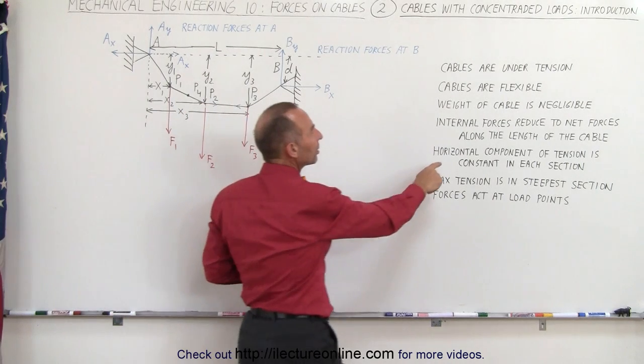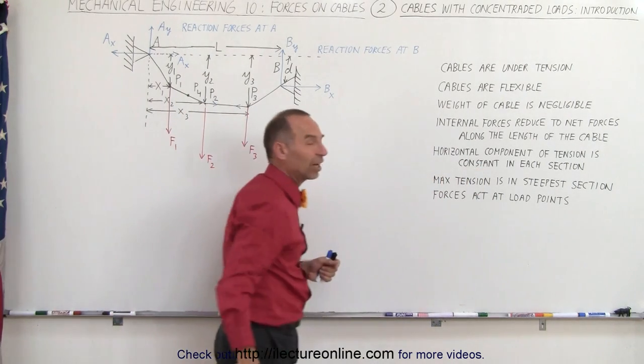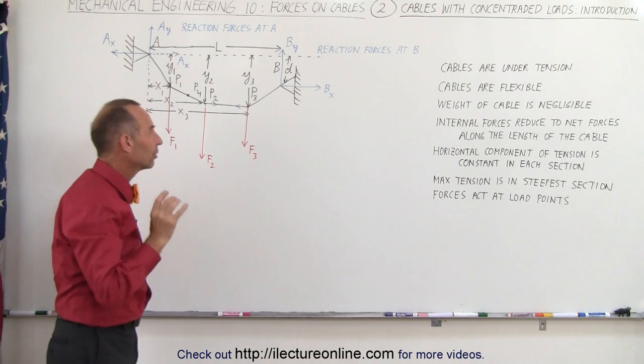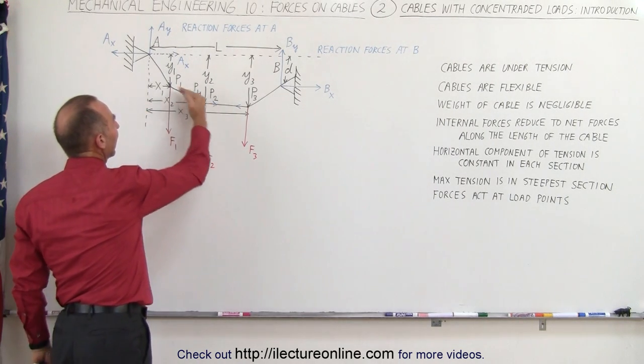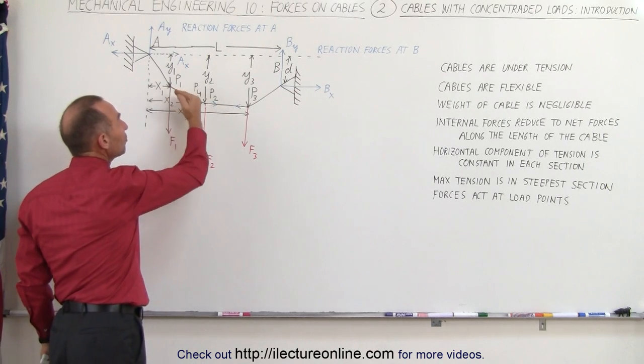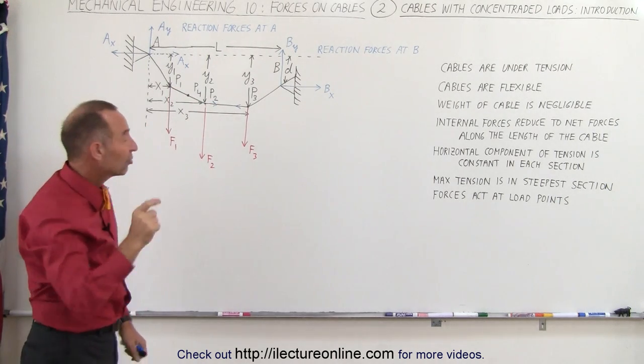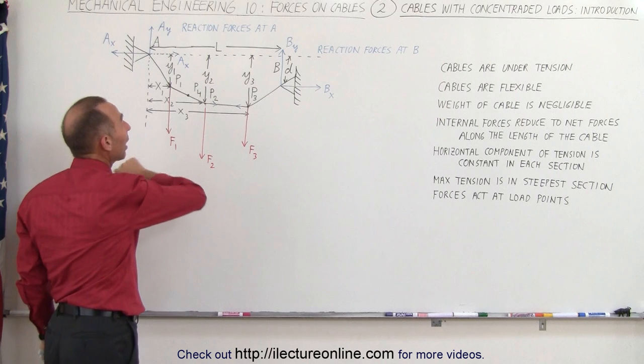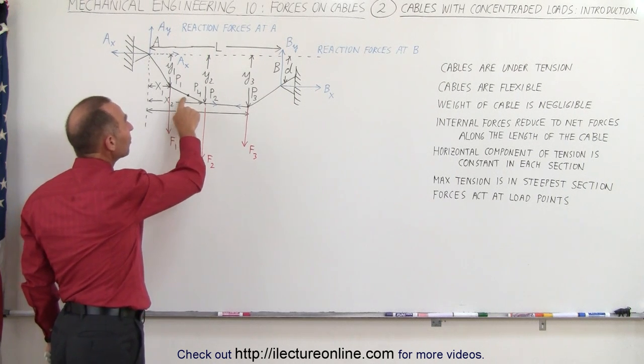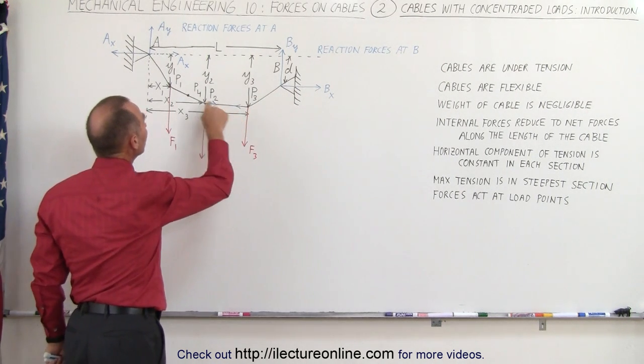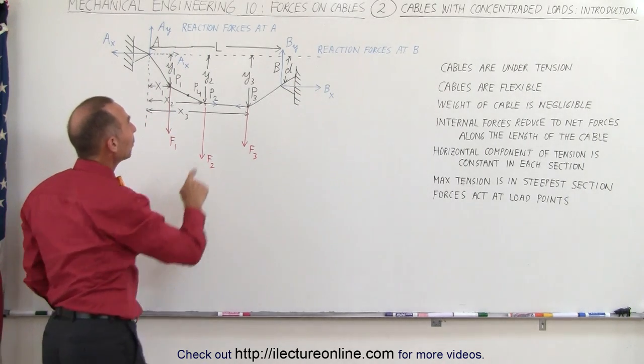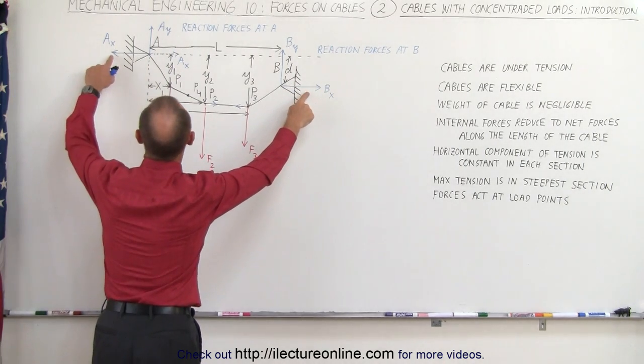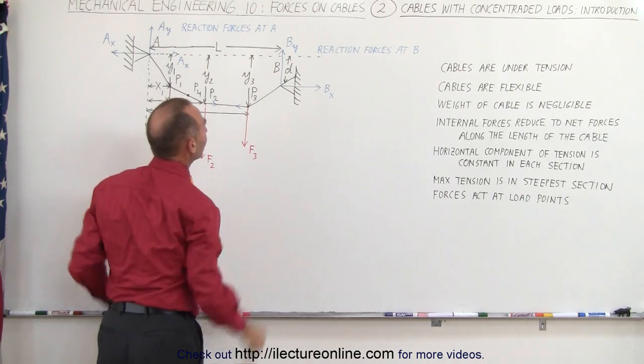The horizontal component of the tension is always constant in each section. Now that's a very important concept. You can see that the tension acts in the direction of the cable, which means that each tension for each section will have an X and a Y component. The X components of each of the sections in the cable are always equal to one another, and they will be equal to the reactionary force at A and at B in the horizontal direction.